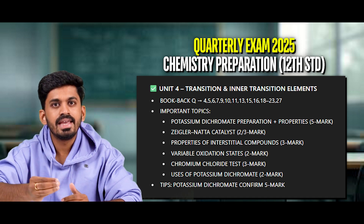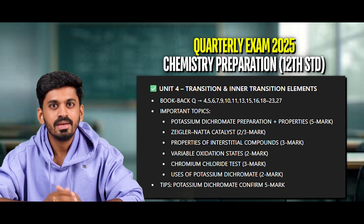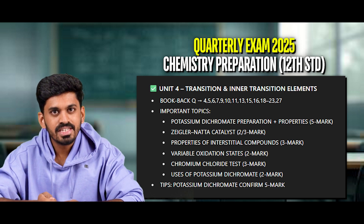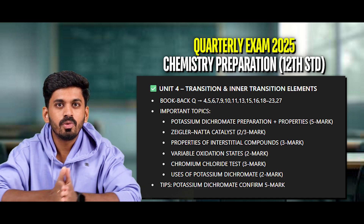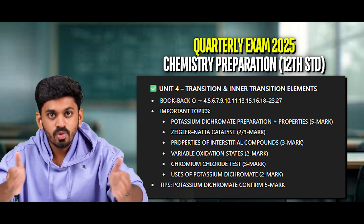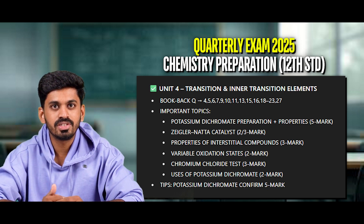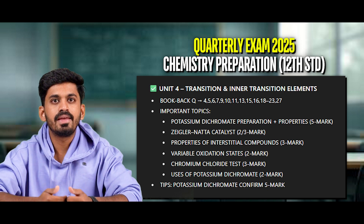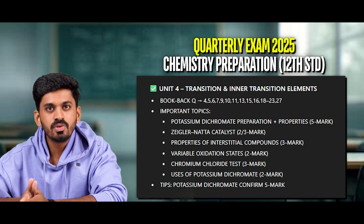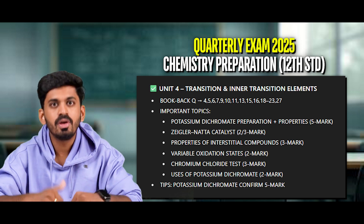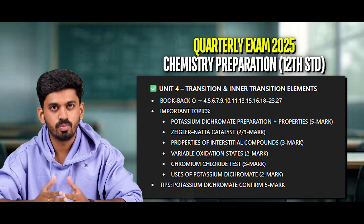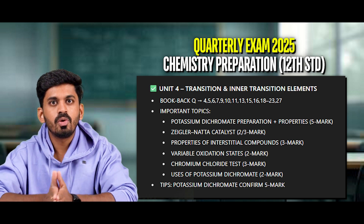Ziegler-Natta catalyst — this is 2 marks or 3 marks. Definition of a user — this is noted. Properties of interstitial compounds — this is 3 marks. Variable oxidation state of d-block elements — this is 2 marks. Chromyl chloride test — this is 3 marks, equation-based explanation. Uses of potassium dichromate — this is 2 marks, and also 3 marks.